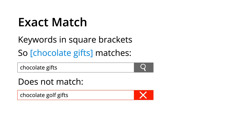Then there is exact match. This is where we place our keyword inside square brackets. This will then match the keyword exactly. So [chocolate gifts] in square brackets will match chocolate gifts, but not chocolate golf gifts. It matches exactly.